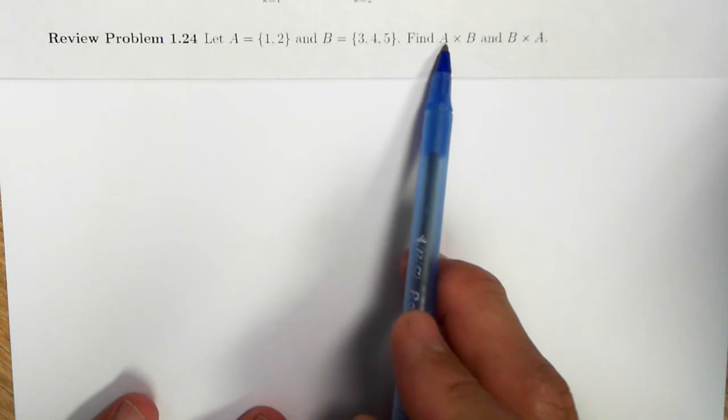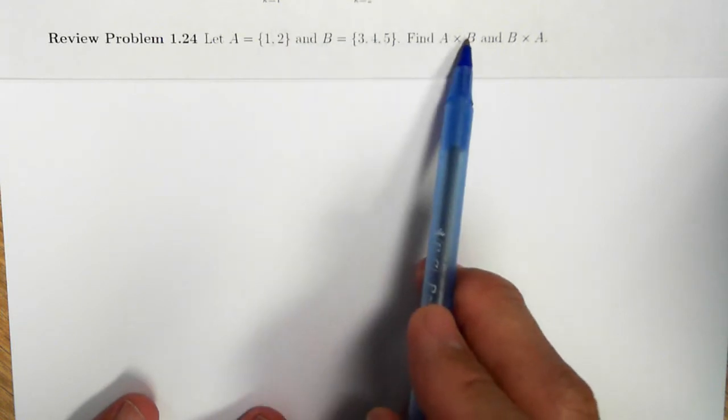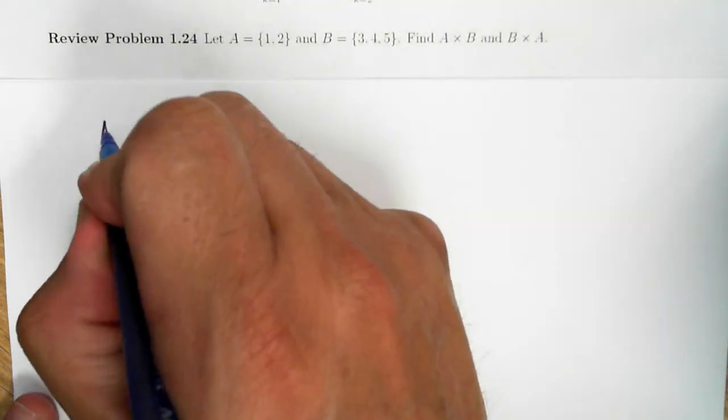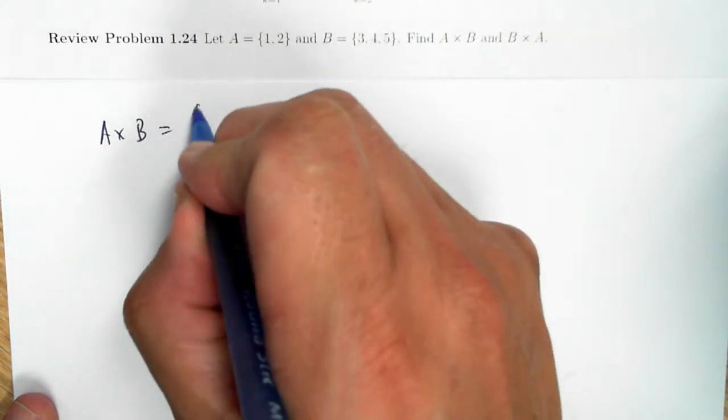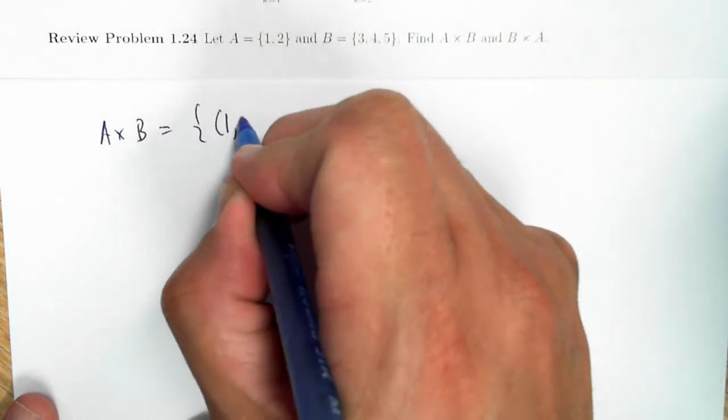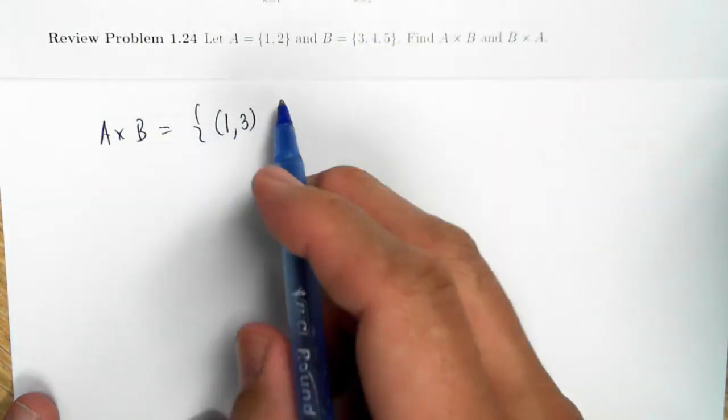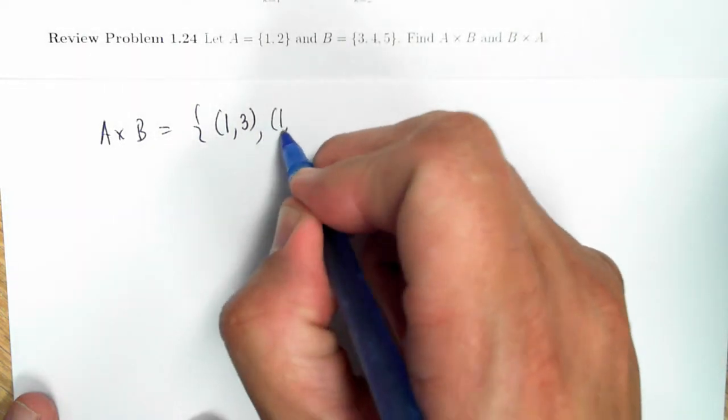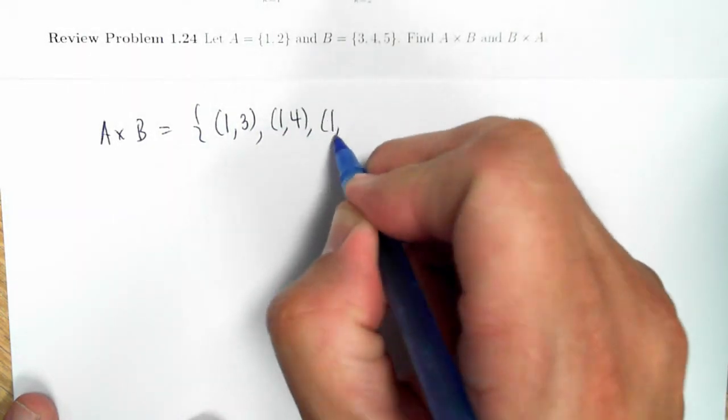This Cartesian product means everything whose first coordinate lies in A and whose second coordinate lies in B. So A cross B, A times B, would be equal to the ordered pairs (1,3), (1,4), (1,5), (2,3), (2,4), and (2,5).